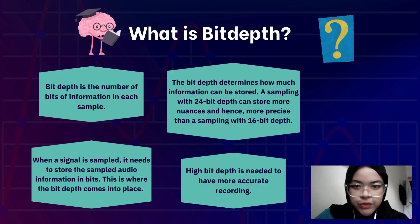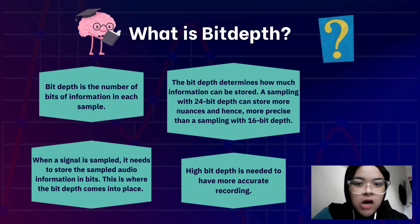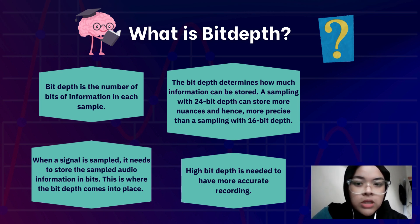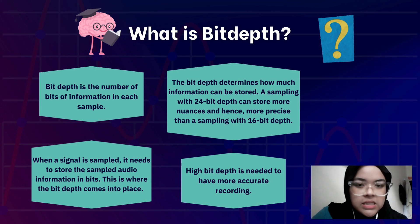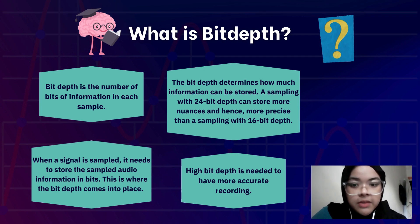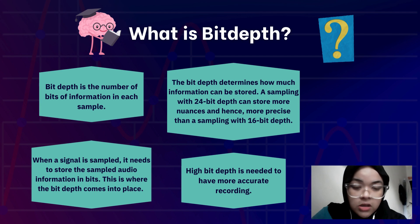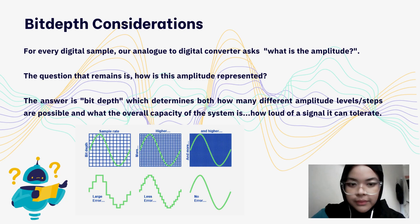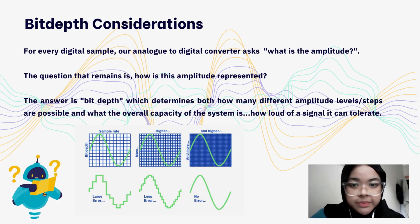Now we move on to bit depth. Bit depth is the number of bits of information in each sample. It determines how much information can be stored — a sampling with 24-bit depth can store more information and hence is more precise than a sampling with 16-bit depth. When a signal is sampled, it needs to store the audio information in bits. Higher bit depth is needed for greater accuracy in our recording or reading.